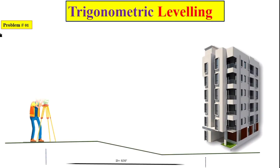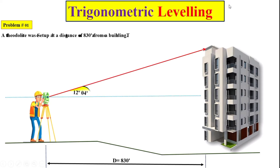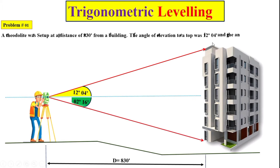In trigonometric leveling we have a problem: a theodolite was set up at a distance of 830 feet from the building, as you can see here. The angle of elevation to the top of the building is given as 12 degrees and 04 minutes, and the angle of depression to the bottom of the building is given as 02 degrees and 16 minutes.